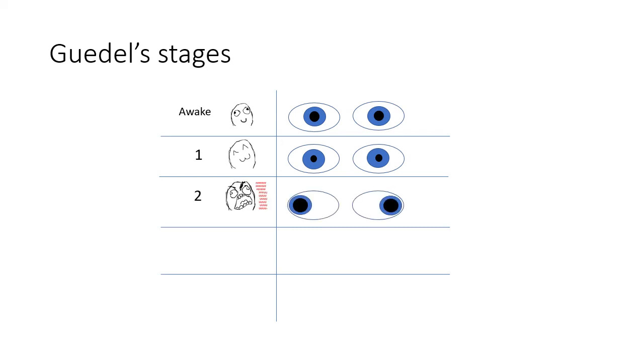The second stage is called excitement. We might also think of it as disinhibition. This is the point at which the patient becomes unconscious during inhalational induction. Here, there is tachycardia, tachypnea, involuntary movement of the trunk and limbs, and most notably dilated and divergent pupils.